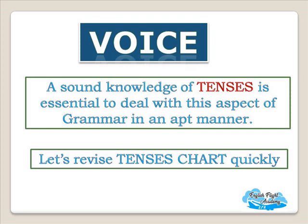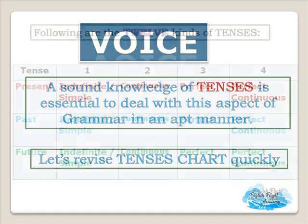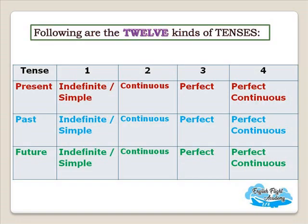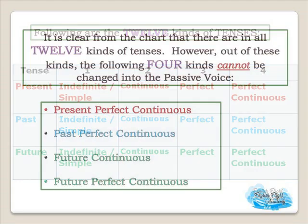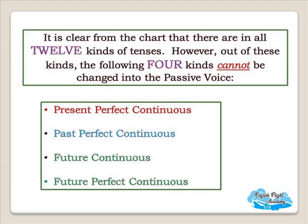So let's revise the tenses chart once again very quickly. There are 12 kinds of tenses: simple present (or present indefinite), present continuous, present perfect, present perfect continuous; simple past (or past indefinite), past continuous, past perfect, and past perfect continuous; simple future, future continuous, future perfect, and future perfect continuous.